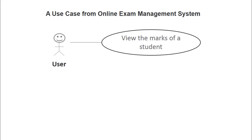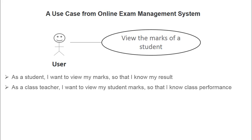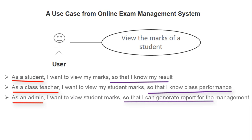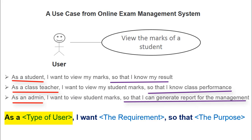Let us rewrite the use case for all three personas. As a student, I want to view my marks so that I know my result. As a teacher, I want to view the student marks so that I know the class performance. As an admin, I want to view the student marks so that I can generate a report for the management. This format of requirement writing is known as the user story format, which contains: 'As a [type of user / persona name], I want [the requirement] so that [the purpose].'